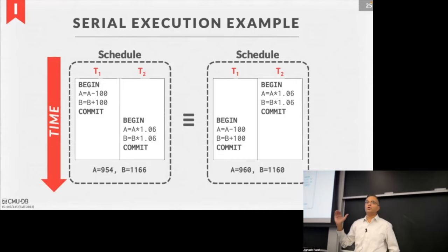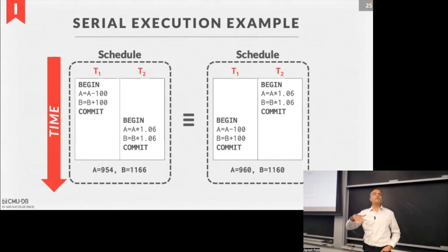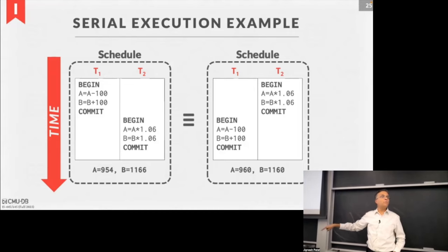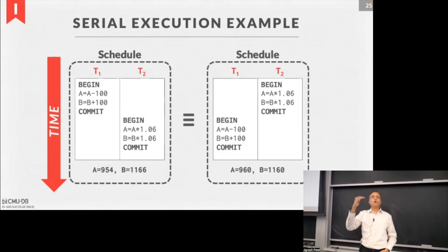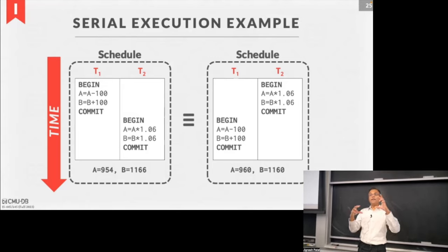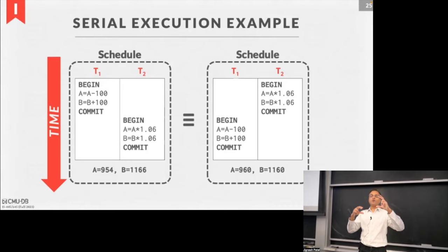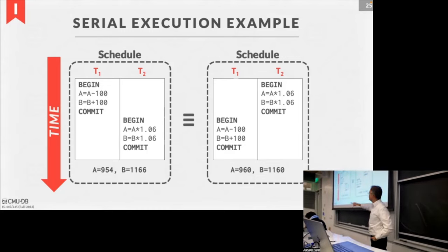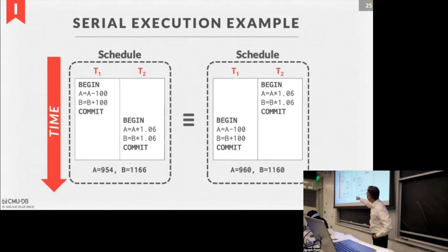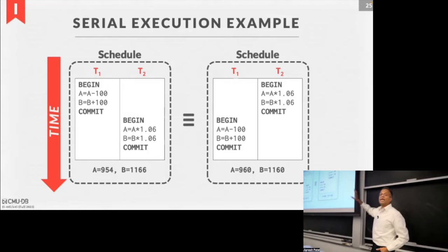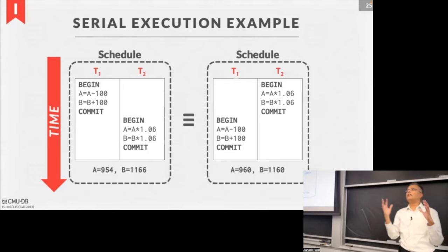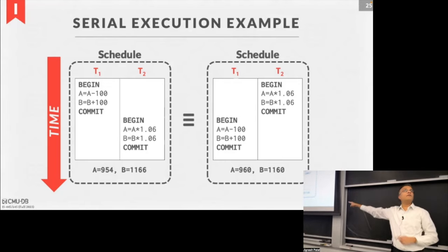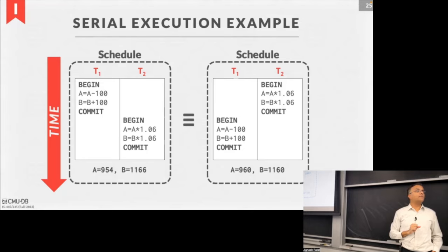There's this notion of a serial execution, where time goes from top to bottom. Serial means no interleaving of actions — either all of T1 happened followed by T2, or vice versa. The thing we're trying to get to is an equivalent schedule — an interleaved schedule that can be proven equivalent to some serial schedule. If we can prove this, we say the schedule is safe and allowed.